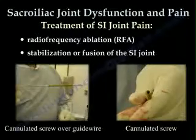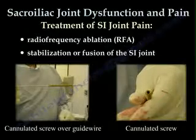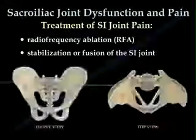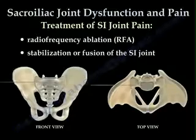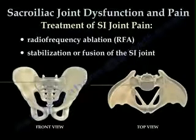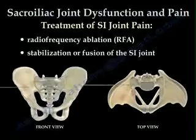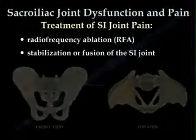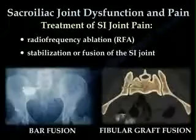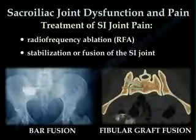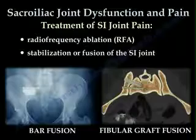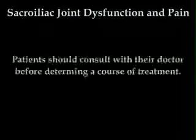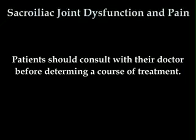Stabilization or fusion of the SI joint is the last resort for treatment of SI joint pain. Percutaneous fixation of the sacroiliac joint is achieved with proper placement of cannulated screws inserted over K wire. Fusion is a much larger procedure, and it can be done percutaneously. Patients should consult with their doctor before determining a course of treatment.